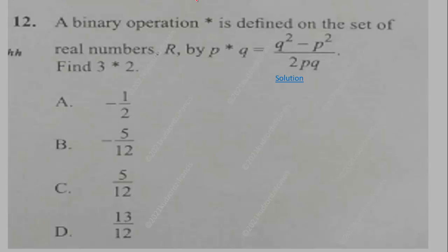A binary operation is defined on the set of real numbers by p star q equals q squared minus p squared over 2pq. We have to find 3 star 2. So we just have to substitute p for 3 and q for 2, and that will give us this expression here: 2 squared is 4 minus 9, which is 3 squared, over 12, and that will give us negative 5 over 12.